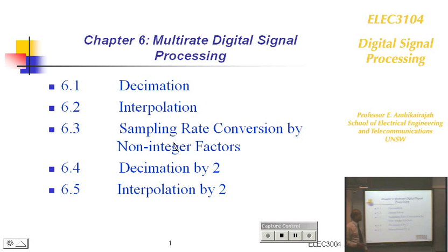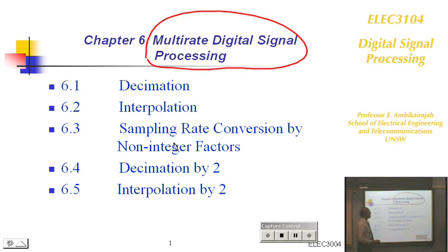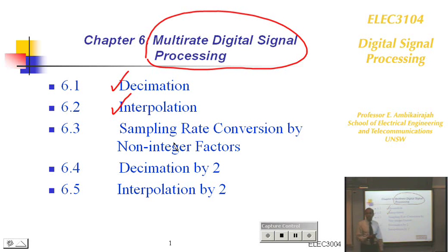We now come to Chapter 6, which is the multirate digital signal processing chapter. In this chapter, we are going to look at decimation, interpolation — decimation meaning reducing the sampling rate, interpolation meaning increasing the sampling rate — and sampling rate conversion by non-integer factor.